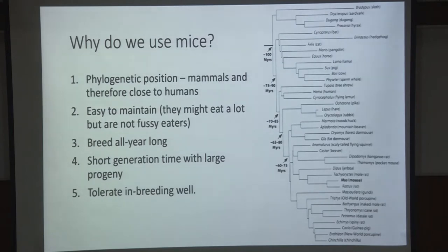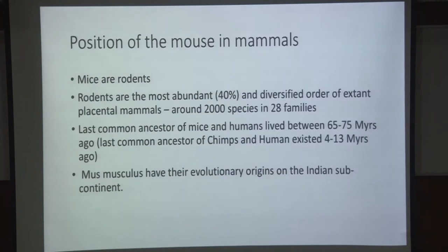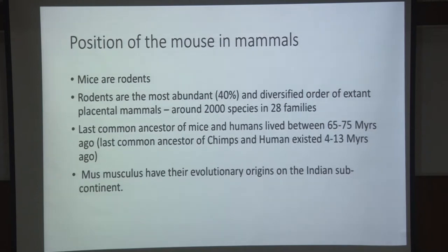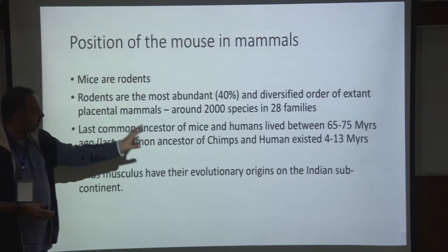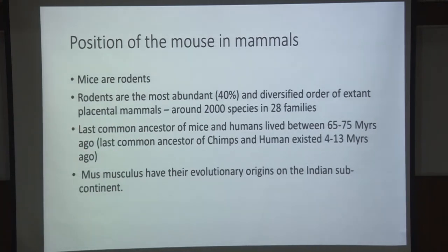Inbreeding was important to generate particular linkage maps when the first mutations were being mapped. Rodents are the most abundant of all mammals — they represent 40% of extant placental mammals, with about 2,000 species in 28 different families. The last common ancestor of mice and humans lived about 75 million years ago, whereas the last common ancestor of chimpanzees and humans lived between 4 and 13 million years ago. So even though we use mouse as a model for humans, there are caveats.